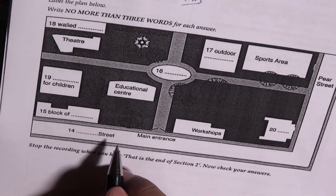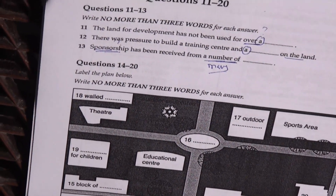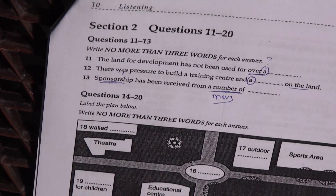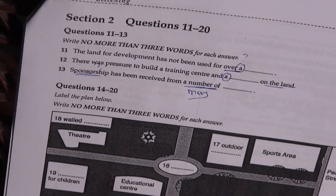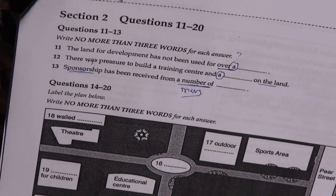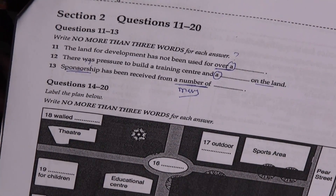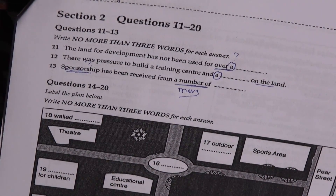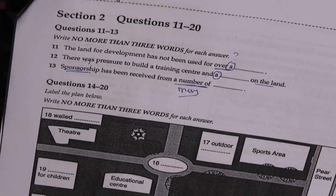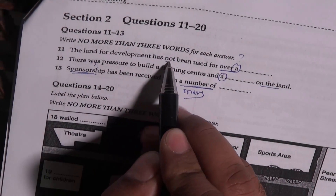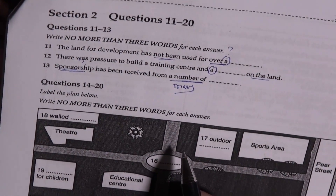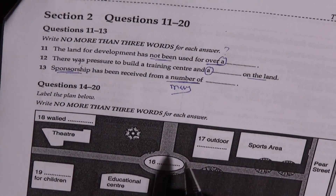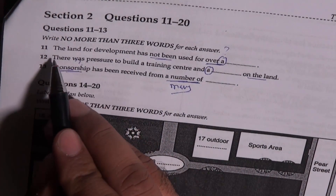Section two. You will hear a talk by a counselor on plans for the development of an old industrial site. First you have some time to look at questions 11 to 13. Now listen carefully and answer questions 11 to 13.